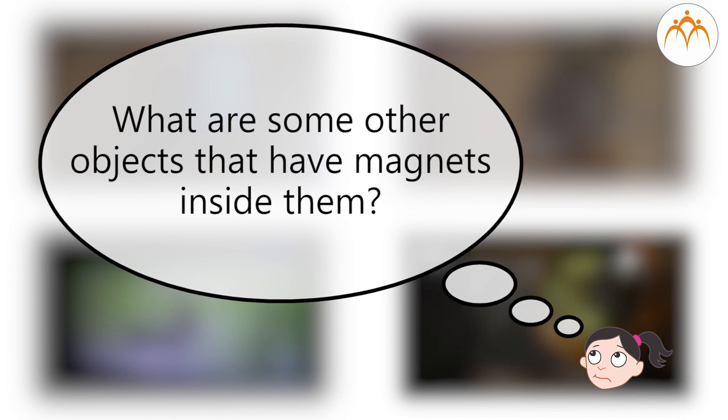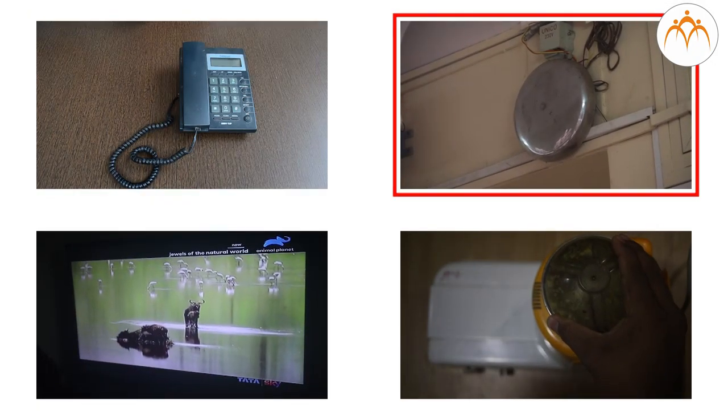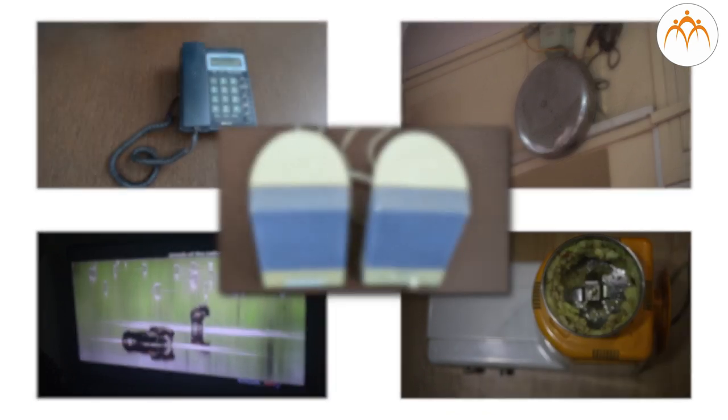These are some of the applications of magnet we see daily. There are other devices around which have magnet but you cannot see them. For example, telephone, doorbell, television, mixer in the kitchen and speaker.